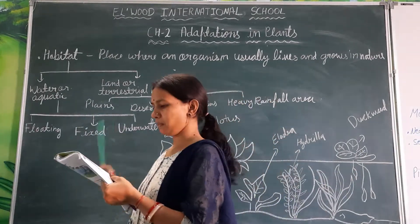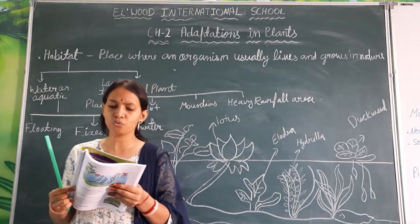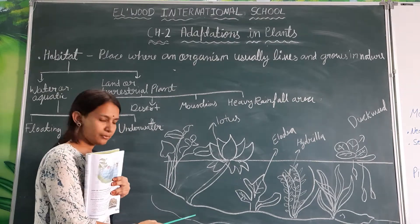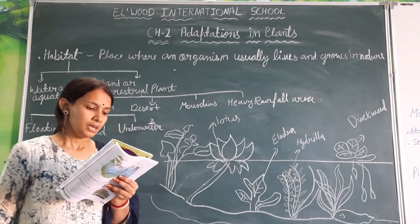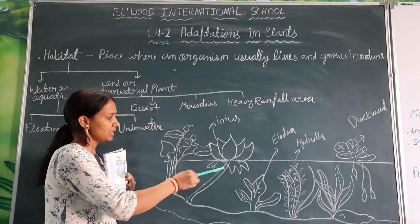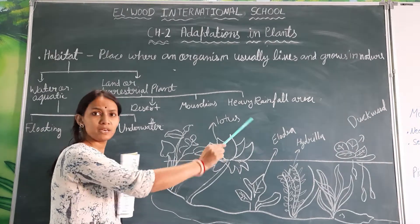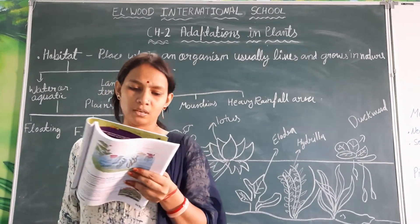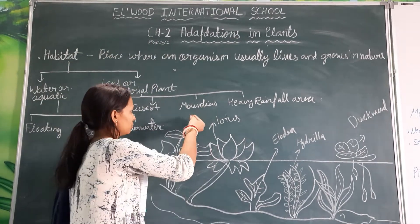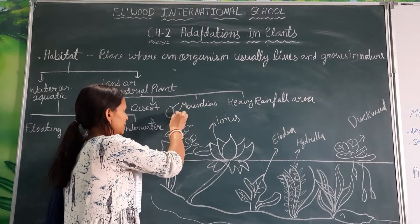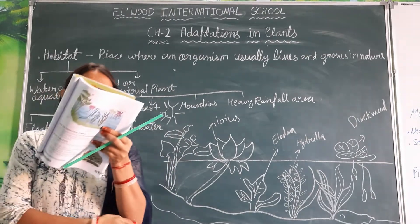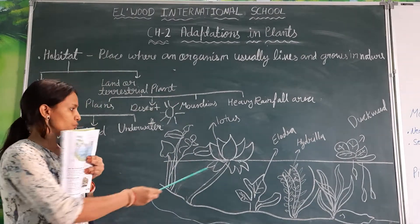Next is fixed plants. Fixed plants have roots fixed to the bottom of the water body. They have long stems to reach the surface of water. The stomata of these plants are present on the upper surface of leaves, so in the presence of sunlight they make their food. Lotus and water lily are examples of fixed plants.